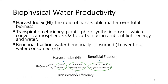Let's explain each of these three concepts. The harvest index is the ratio of harvestable matter to total biomass. Transpiration efficiency describes the plant's photosynthetic processes through which it converts atmospheric CO2 to biomass using energy and water — this is also called photosynthetic efficiency.